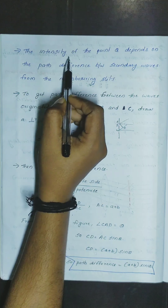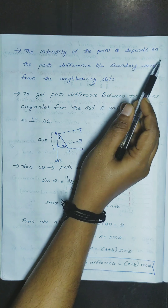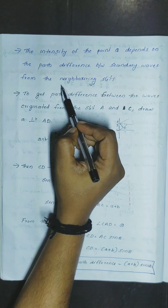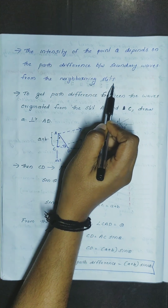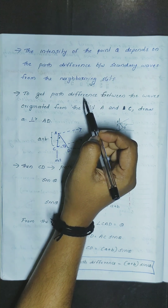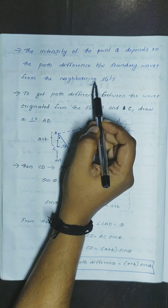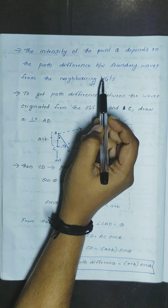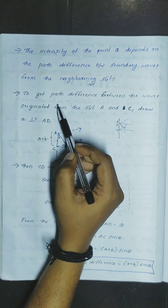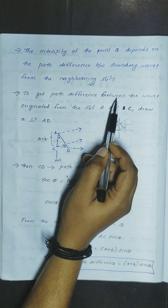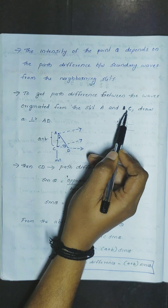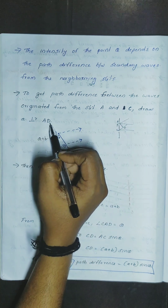The intensity at point Q depends on the path difference between secondary waves from the neighboring slits. The path difference depends on the path difference. To get the path difference between the waves, it is originated from the slits A and C. Draw a perpendicular from A.